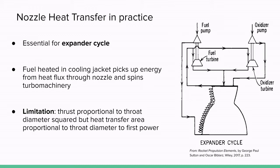but heat transfer is proportional to that throat diameter to the first power, there is a diminishing return effect where the heat transfer output is not enough to power the engine at a certain overall size, and so you get a maximum thrust value. This is why the expander cycle is typically used in space applications, where you don't really need much thrust but you need high efficiency. The RL10 is an example of an engine using such a cycle.